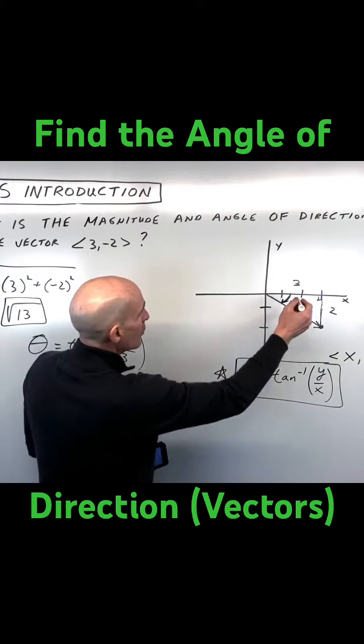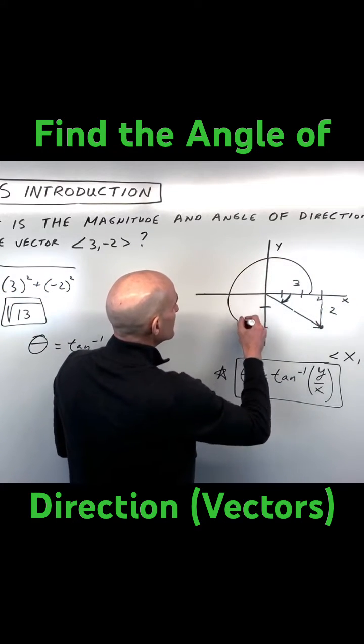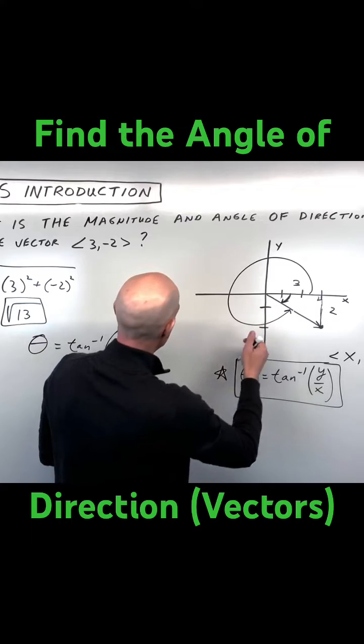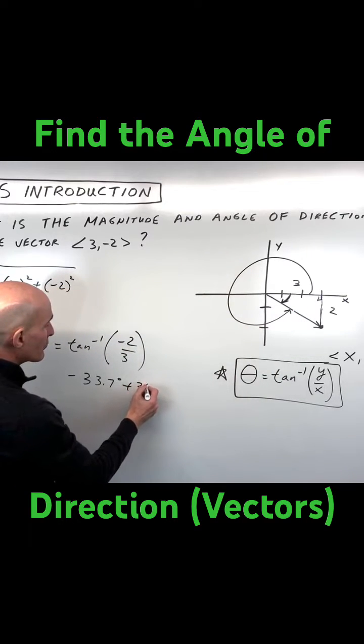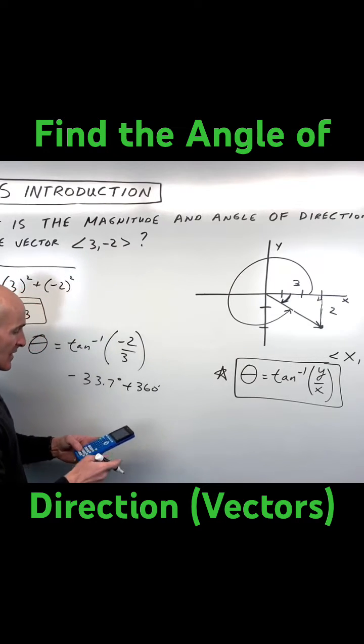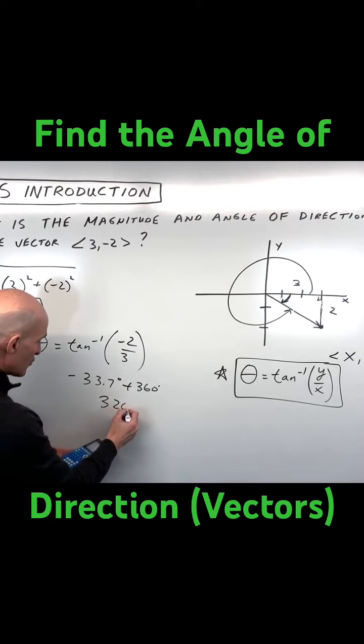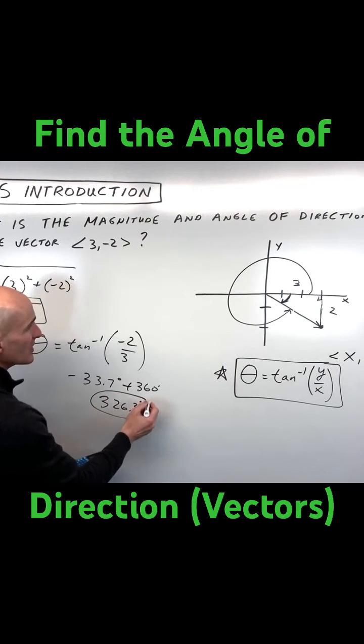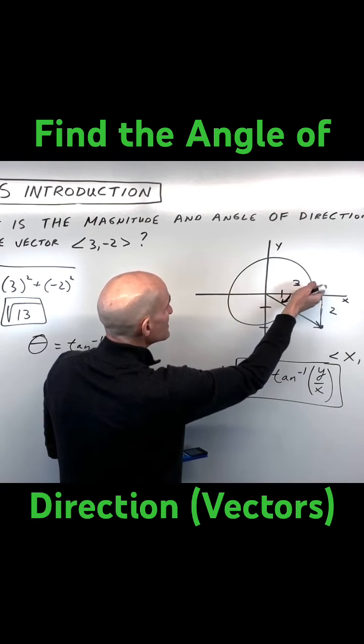So if we want to write this as a positive angle going like this, what we're going to have to do is add 360 degrees to this angle. So let's see what that comes out to. That comes out to 326.7 degrees. So that's if you're measuring from the positive x-axis.